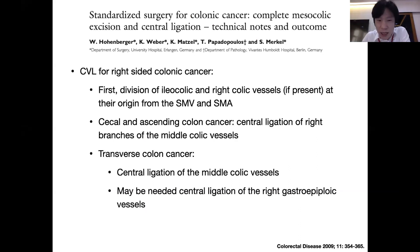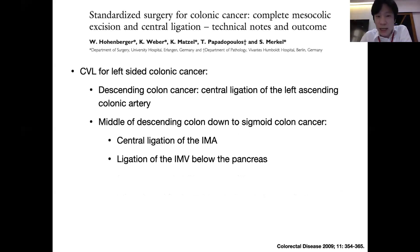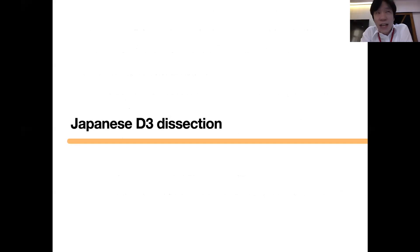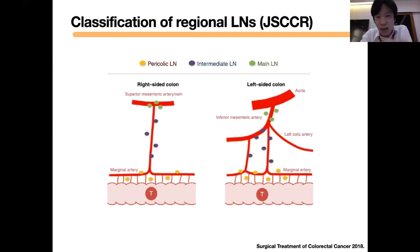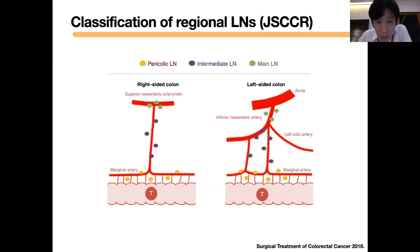An interesting point Hohenberger proposed is for the transverse colon: they not only do central ligation of the middle colic vessel but also perform extra-mesenteric vessel ligation and extra-mesenteric lymphadenectomy. For the left-side colon, a similar technique has been proposed from the Japanese side — they call it D3 dissection. The lymph nodes targeted in D3 dissection are: the main lymph node shown in green, the intermediate lymph node along the feeding vessel shown in purple, and the pericolic lymph node along the marginal artery nearby the tumor shown in yellow.